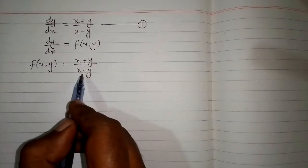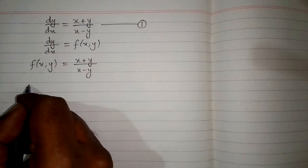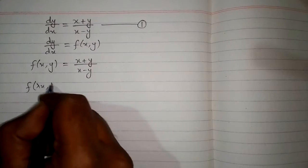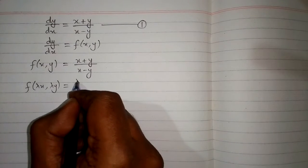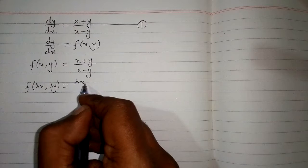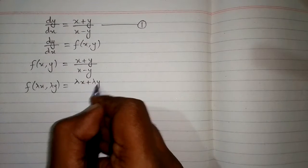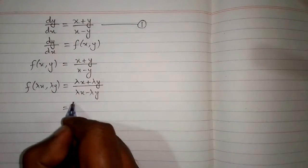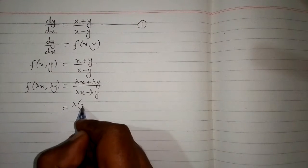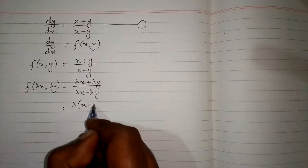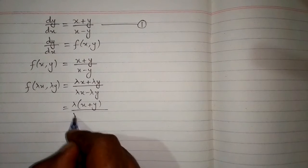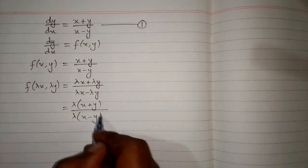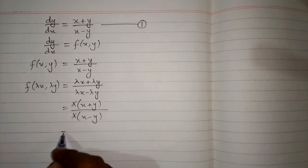Now we will check that this function is a homogeneous function. For this we will put λx in place of x and λy in place of y. We can take λ common from the numerator, giving λ(x + y), and from the denominator, giving λ(x - y). This λ and λ cancel.